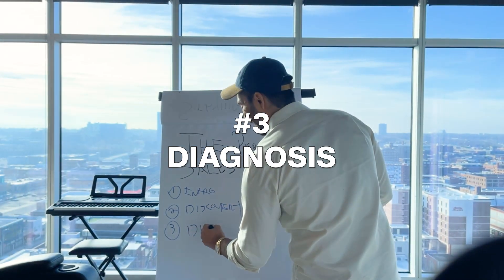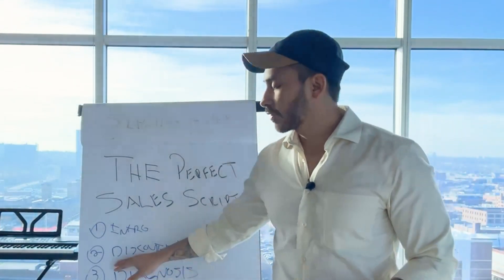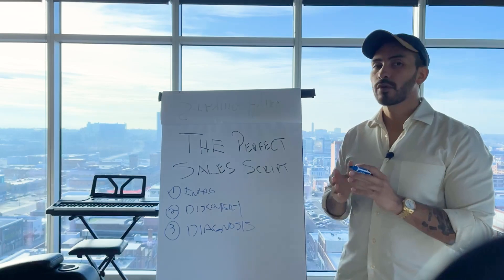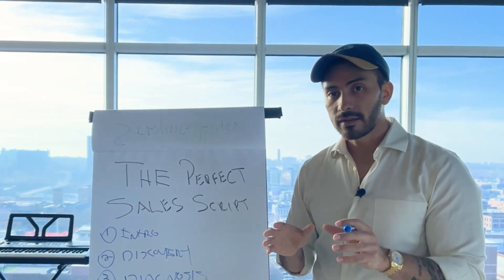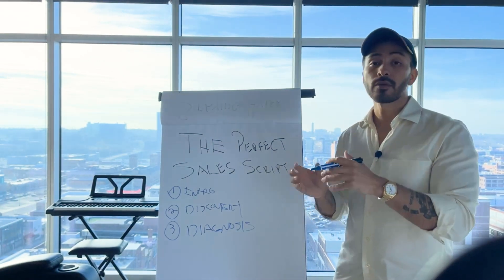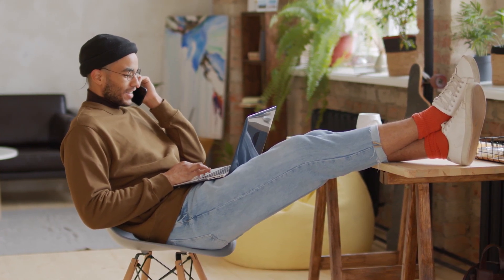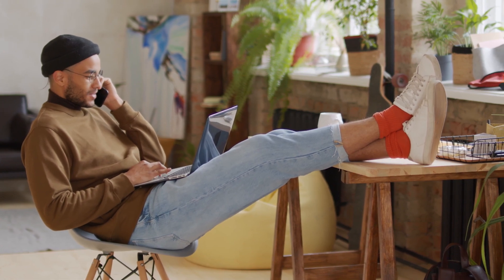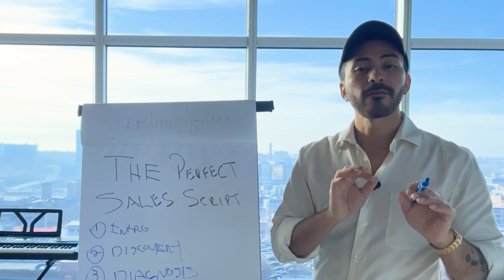Number three is diagnosis. Here's the problem with a lot of sales reps — it's an epidemic. By the time they get all this info in discovery, the process is super rushed, so they don't build the necessary perceived value to pitch the price point they want. The diagnosis is confirmation of the information uncovered in discovery. We only talk about the things they mentioned needing help with. Let them confirm it. If they bring up anything else, we write that down and chunk down on that obstacle to get the details.